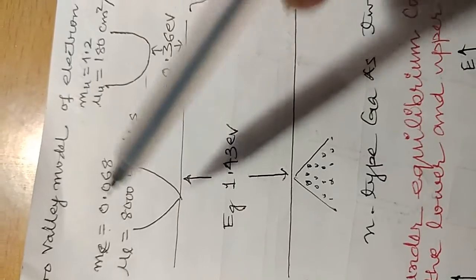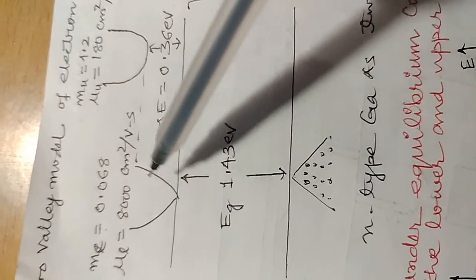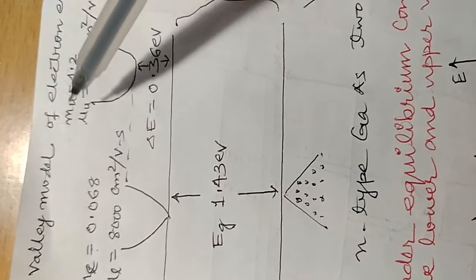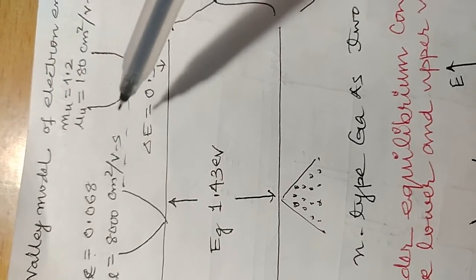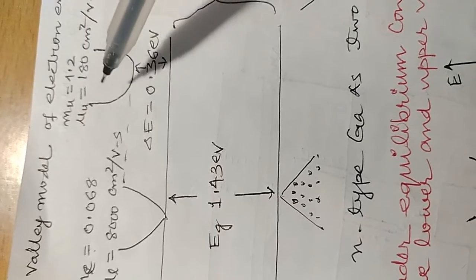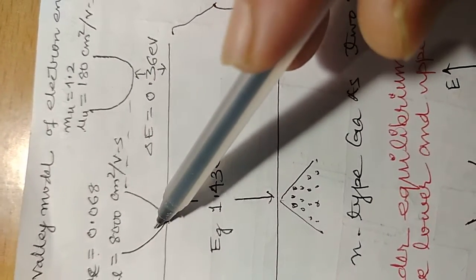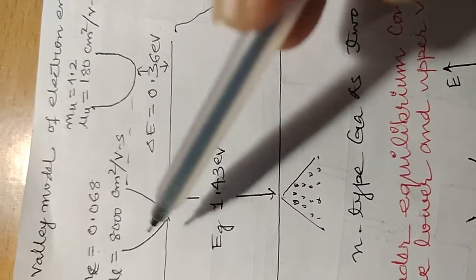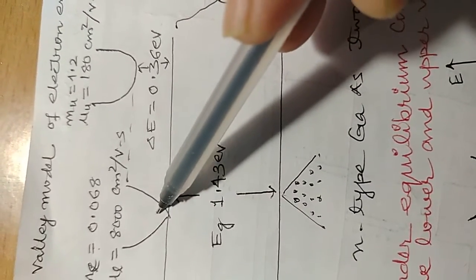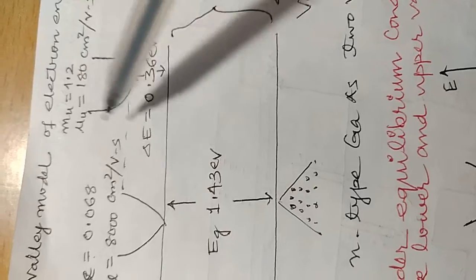We have assumed that the naturally developed field in the lower valley is E_L and the field available in the upper valley is E_U. Under the equilibrium condition, the charge density available in the lower valley and in the upper valley are both the same.